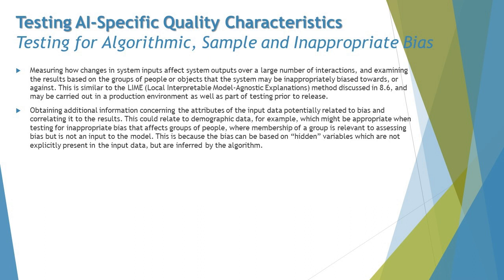Obtaining additional information concerning the attributes of the input data potentially related to bias, and correlating it to the results, could relate to demographic data. This might be appropriate when testing for inappropriate biases — like false positives and false negatives — that affect groups of people where membership of a group is relevant to assessing bias but is not an explicit input to the model. Bias can be based on hidden variables not explicitly present in the input data but inferred by the algorithm.